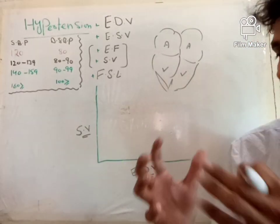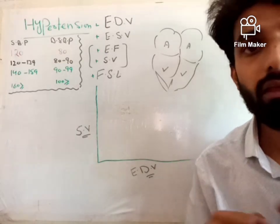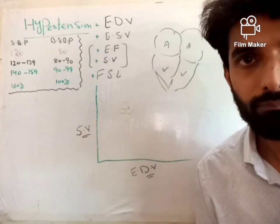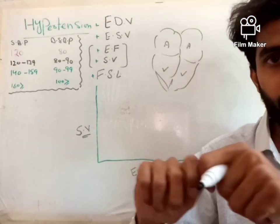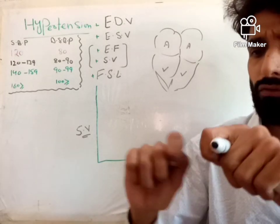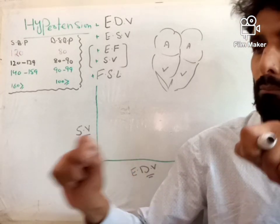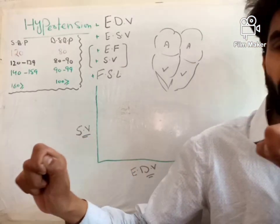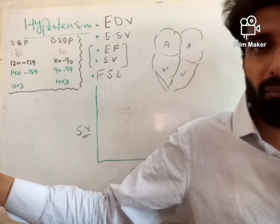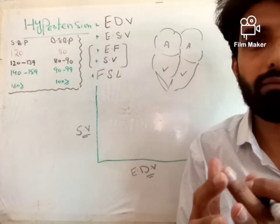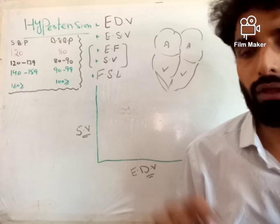The point is that our heart ventricles are very flexible. If you stretch a rubber band a little bit more, when it is stretched more and then released, it comes back more powerfully to its original position.